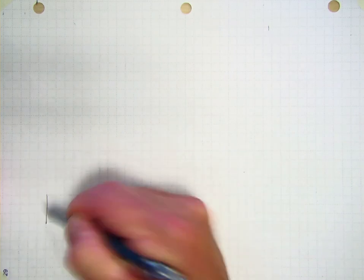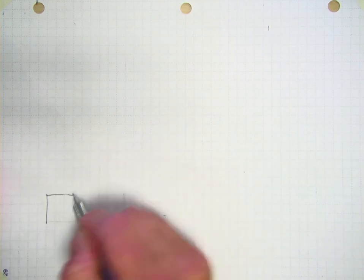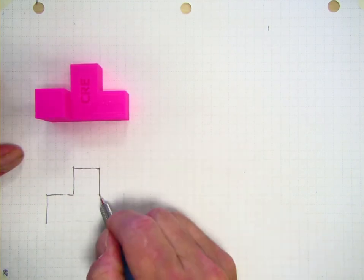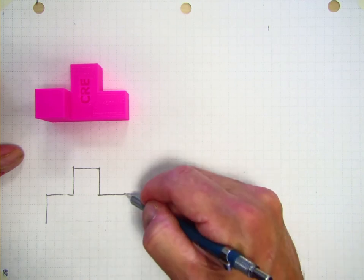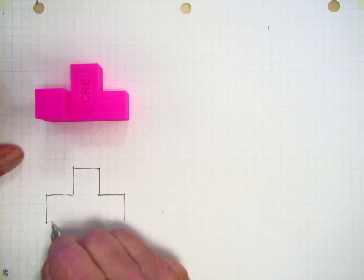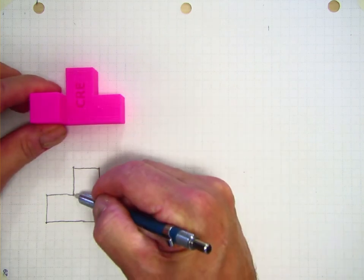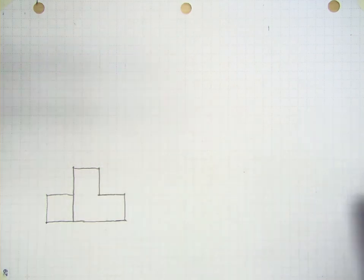I'm going to start with the front view. Of course, you're doing this without the benefit of having your parts in front of you, so you're just going to have to visualize it. I want to make sure I don't lose that edge there. Okay, so there's my front view.